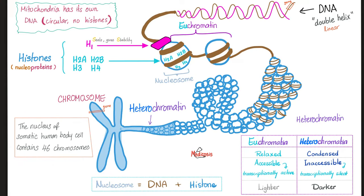For enzymes and proteins to replicate DNA, it needs to be relaxed and exposed. I cannot work on DNA that is wrapped many times on itself and on histones — that's heterochromatin. But I can work on euchromatin. Euchromatin is relaxed, accessible, transcribable and replicatable, and because it's relaxed, it appears lighter under the microscope.